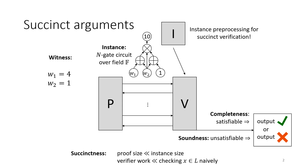In general, to allow succinct verification, you also need one more ingredient: pre-processing. The verifier shouldn't have to do O(N) work to read the instance. So in this setting, we consider pre-processing arguments where a pre-processor takes the instance and produces a small digest which it gives to the verifier, who then runs succinctly.